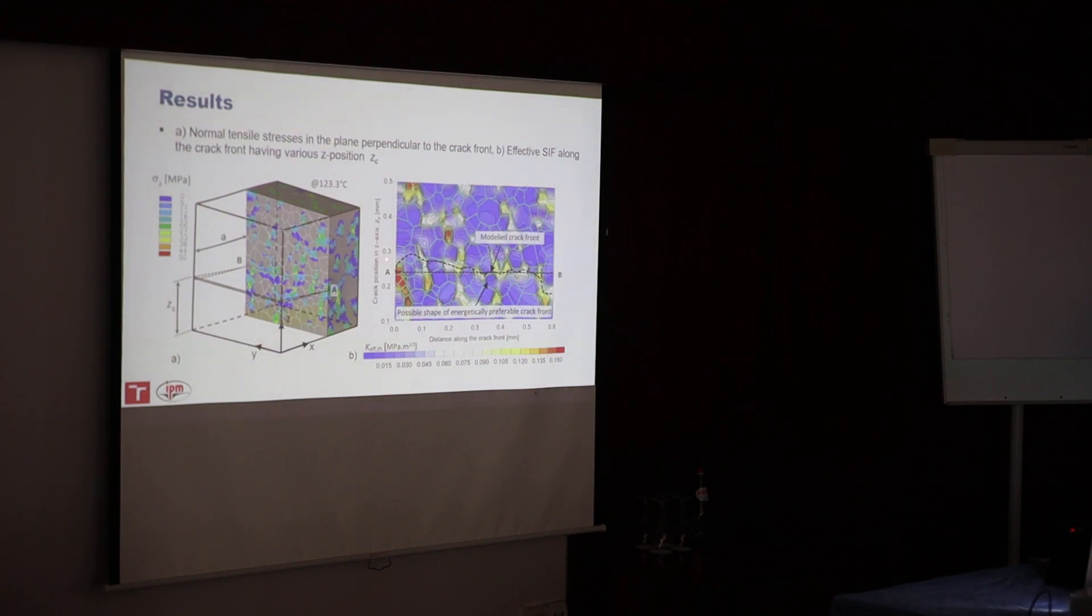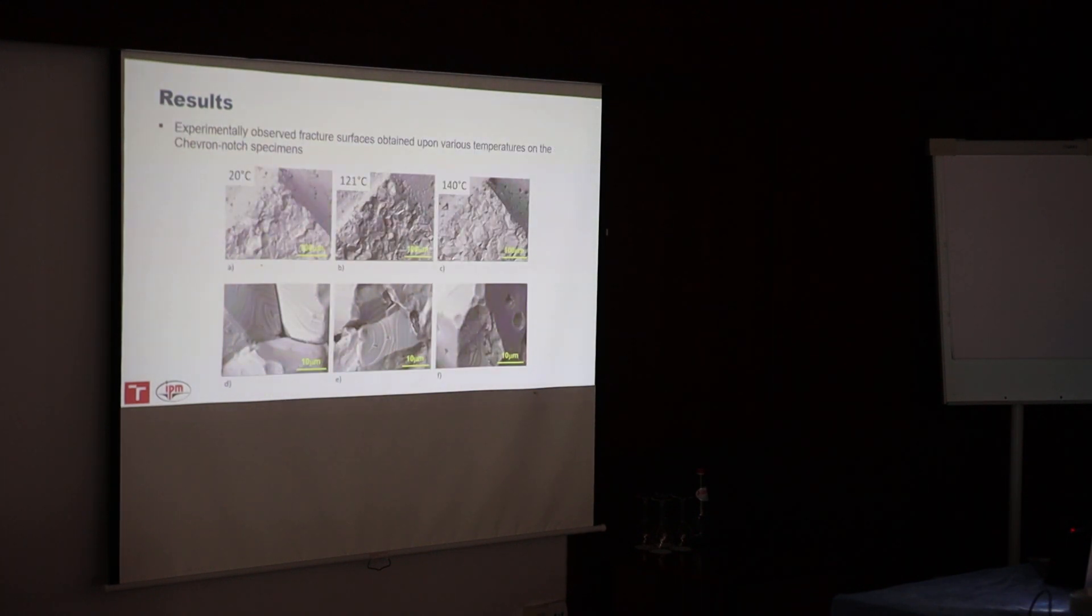From this point of view the crack will go around mostly around the big grains and make some wavy shape of the final fracture surface. This was also demonstrated by some experimental observations. We tested the specimens below and above the Curie temperature. We see more or less transgranular fracture surfaces but in the vicinity of Curie temperature the surface was not so flat but really the crack went around the big grains and all around the interfaces between big and small grains.